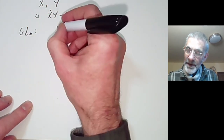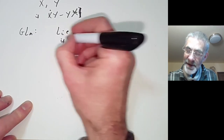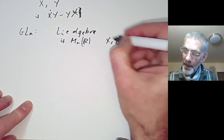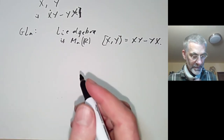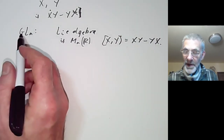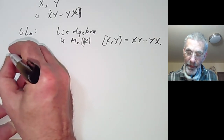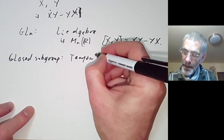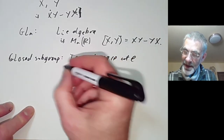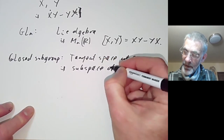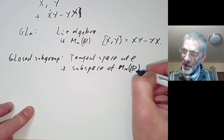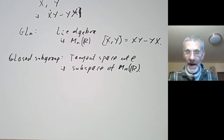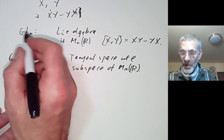So we can now work out the Lie algebras of various Lie groups. The Lie algebra of GL_n is just the n×n matrices over the reals with the Lie bracket given by [X, Y] = XY − YX. If we've got a closed subgroup of the general linear group, the tangent space at the identity is just a subspace of M_n(R), and it's not difficult to check that the Lie bracket is just the restriction of this bracket. This makes it very easy to work out the Lie algebra of any closed subgroup of GL_n.